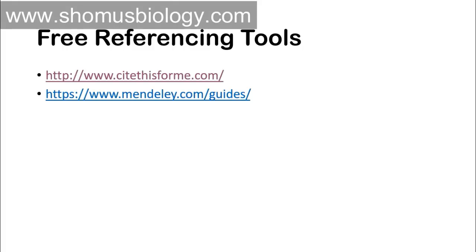The second tool is www.mendeley.com. Mendeley also offers software that can be combined with Microsoft Word, so while writing in Word you can check the referencing pattern there. Mendeley works better the more you use it, but I personally prefer CiteThisForMe. You can also find details about every referencing system at mendeley.com/guides, which has detailed information about all the different referencing systems.